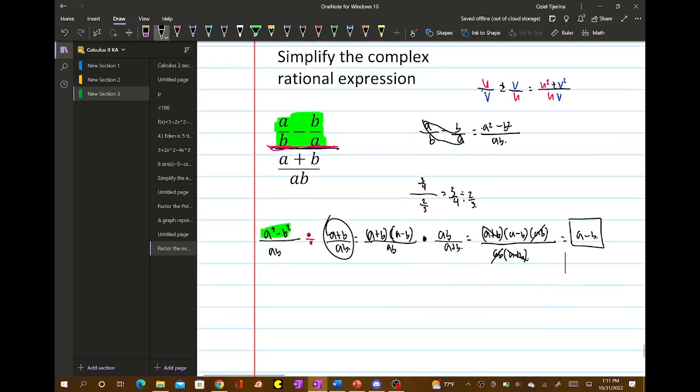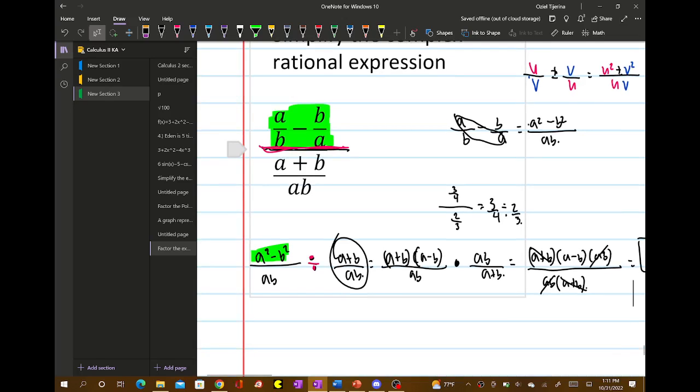So the idea is when you're simplifying complex rational expressions like this, the big bars basically tell you that it's being divided. So two fractions are being divided. And the top part, you have to simplify it to make it into one fraction and then divide it out by the other fraction.